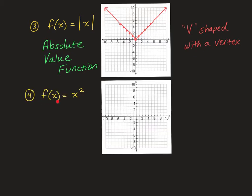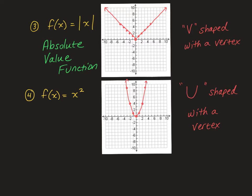The next parent function is f of x equals x squared. If you plug in 0, 0 squared is 0. 1 squared is 1, negative 1 squared is also 1. 2 squared is 4, and 3 squared is 9. This creates a nice u-shape. Anytime you see x squared, it's always going to be u-shaped. It also has a vertex where it comes down, stops, and goes back up. This is called a quadratic function.